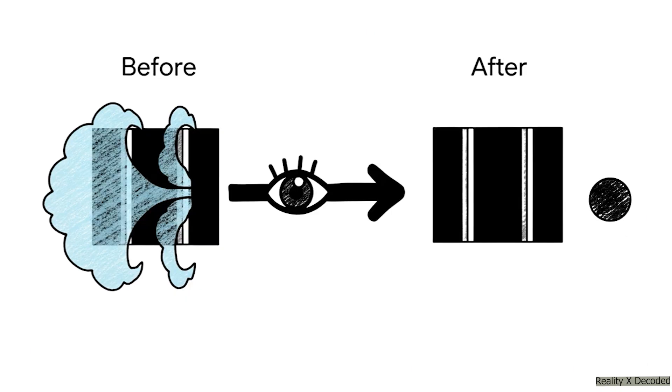And this is the key. When you put that detector there to measure which path, you're forcing that wave of possibility to pick one. You're forcing the universe to choose. The act of observation itself collapses that fuzzy wave into a single definite reality. Now the electron is a particle at one specific spot, and all that strange wave behavior just disappears.